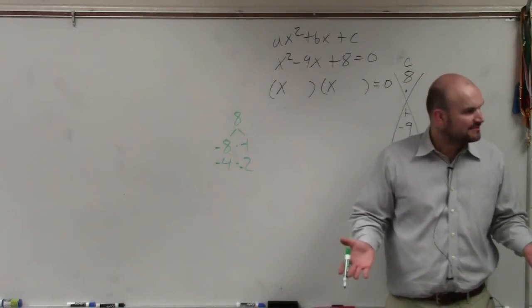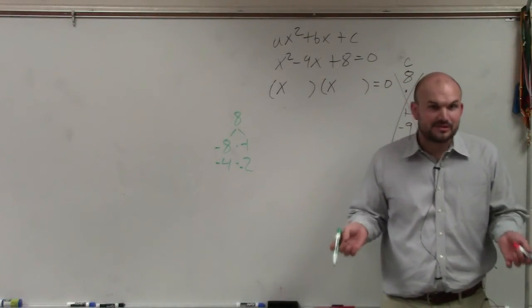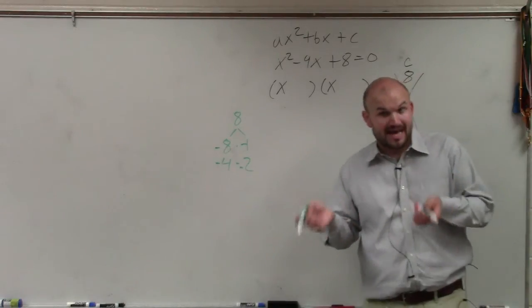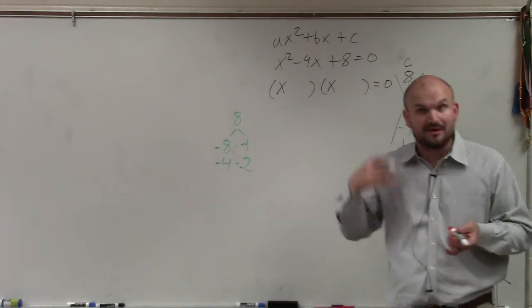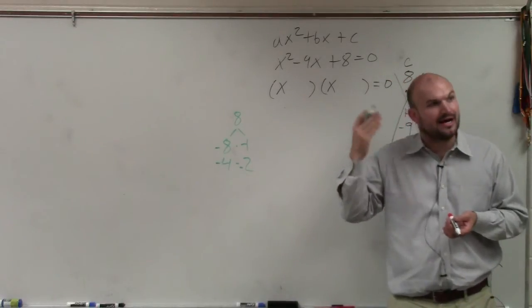Because you can't add two positive numbers and get a negative. It has to be two negatives. Two negative numbers add to give you a negative, and two negative numbers multiply to give you a positive. That's the thinking that needs to be going on in your head.